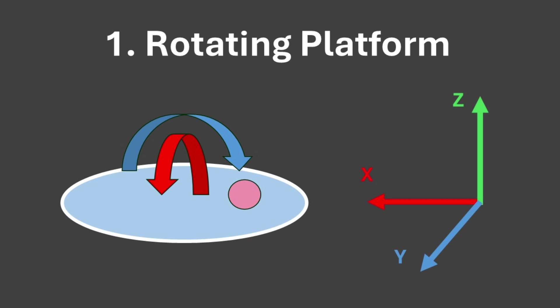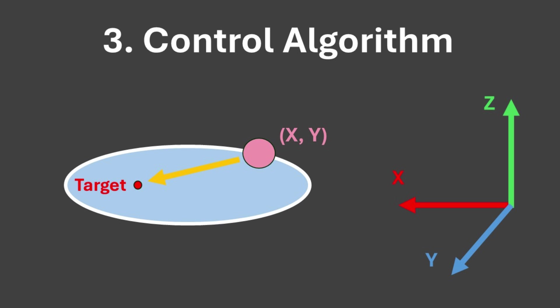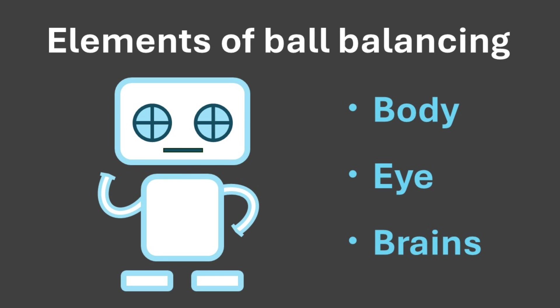So what do you need to make a ball balanced robot? A device that can freely control the tilt of the platform, a sensor to acquire the position of the ball, and an algorithm to bring the acquired ball position closer to the target position. These are the body, eyes, and brain of the robot respectively.